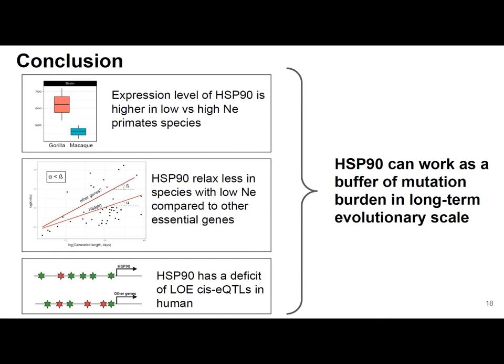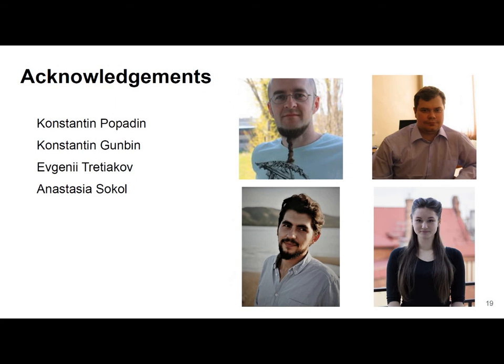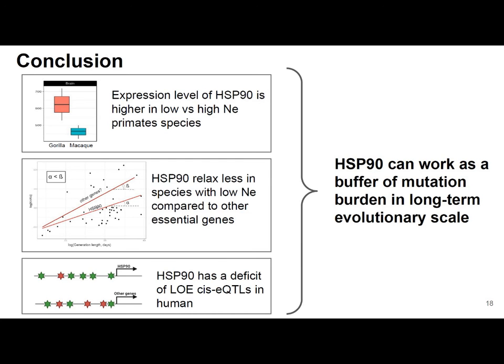Taking into account all our results, we can conclude that they are all in line with our hypothesis, and that Hsp90 can work as a buffer of mutation burden on a long-term evolutionary scale. I would like to thank my colleagues for their contributions to this work. Thank you for your attention, and I am ready to answer your questions.